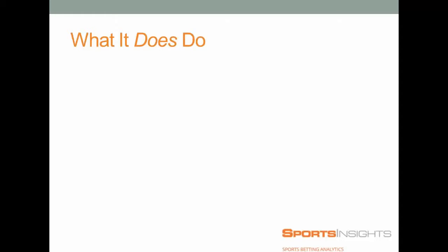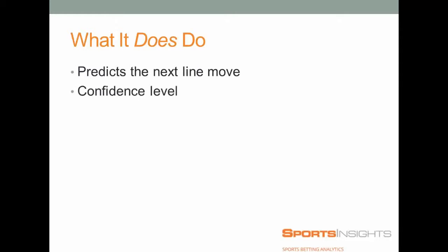So what does it do? It does predict the next line move, very accurately. It's going to tell you with a confidence level which way a game is going to go — for example, 85% confidence this game, Virginia, will go from three and a half to three. Confidence levels will be in the 90s, 80s, or 70s. The lowest we give out is around 67%. We definitely have other predictions below that, but it's a question of quantity versus quality, and we want people to feel confident — close to the 80% level — that our predictions will hit.